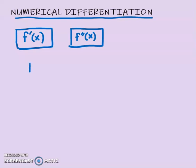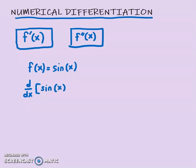For instance, let's say if f(x) equals sine x, I can find this derivative easily by taking the derivative with respect to x. That gives me cosine x — this is my f prime x. Now, is there another way to find this derivative? That's what we're going to look at in this topic: numerical differentiation.